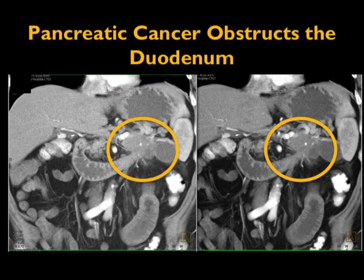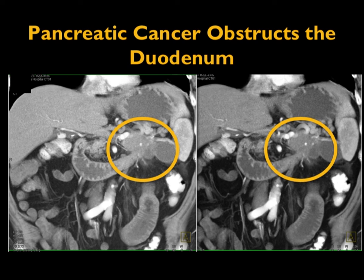When you're looking at obstruction, you can often see the cause. In this case of suspected bowel obstruction, you can see a mass in the tail of the pancreas that was not previously known. This patient's small bowel obstruction and gastric outlet obstruction — the presumed diagnosis — is actually due to a carcinoma of the tail of the pancreas obstructing the small bowel at the ligament of Treitz. A very nice example.